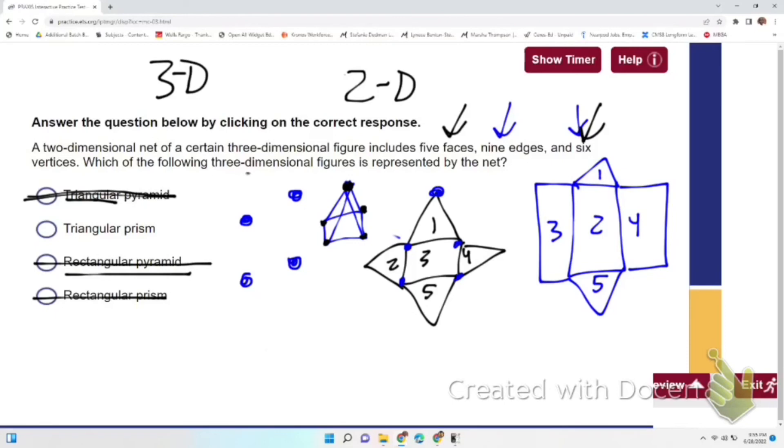Now looking at the prism we have one, two, three, four, five, and six. And if you want to see that as a three-dimensional figure, this is what it looks like where you have vertex here, two, three, four, five, and six.